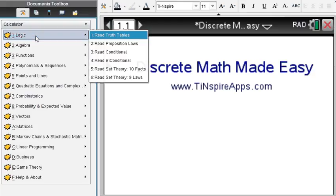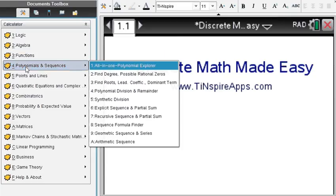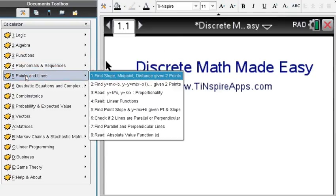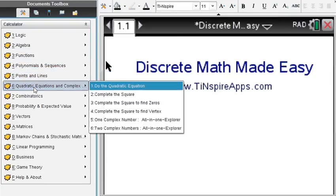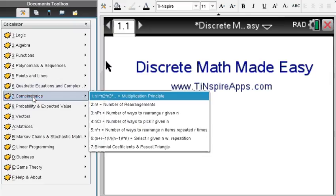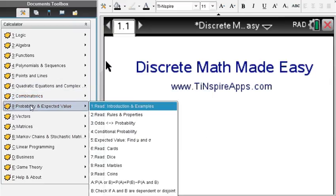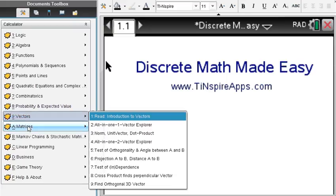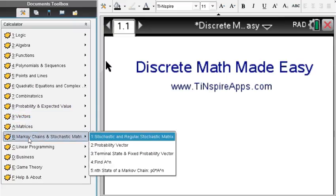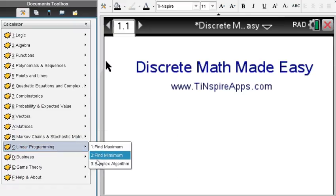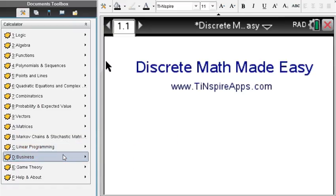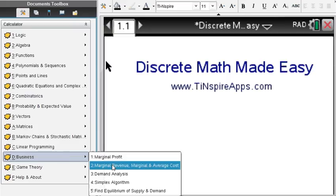Or also called Operations Research Made Easy course. Let me give an overview: logic, algebra, functions, polynomials and sequences, points and lines, quadratic equations, complex numbers, combinatorics, probabilities, vectors, matrices, Markov chains and stochastic matrices.